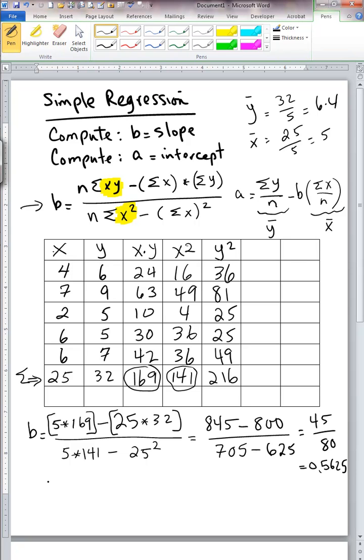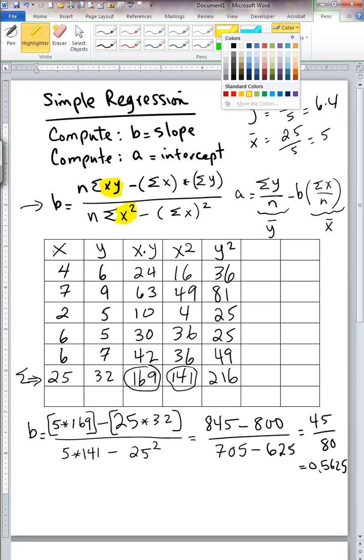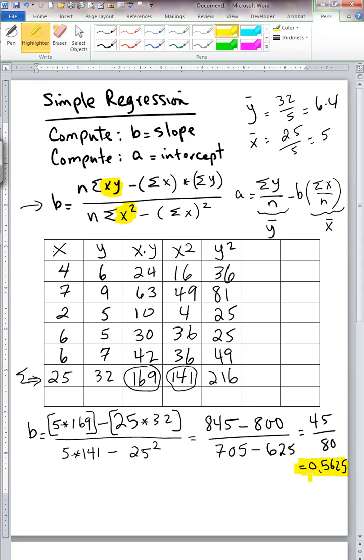Now, we will need this slope so that then we can compute the intercept. So a, which is the intercept, remember that we needed y̅, or the average y values, which is 6.4. And then we need to subtract from it, minus b, which we computed to be 0.5625, multiplied by x̅. And x̅ we computed to be 5.